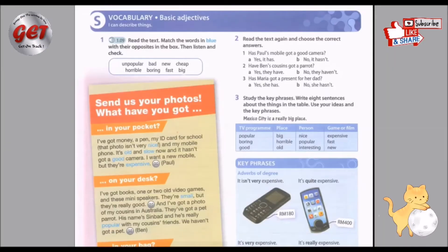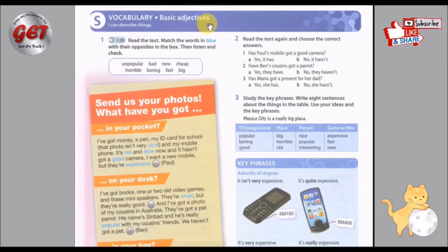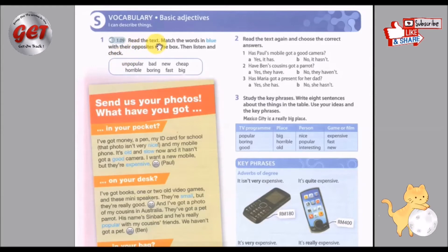Year 5, page 8. 生字 (vocabulary) — basic adjectives. 基本的形容词。I can describe things. 我可以形容东西。First, read the text. 好，第一个部分我们要朗读以下的文字。